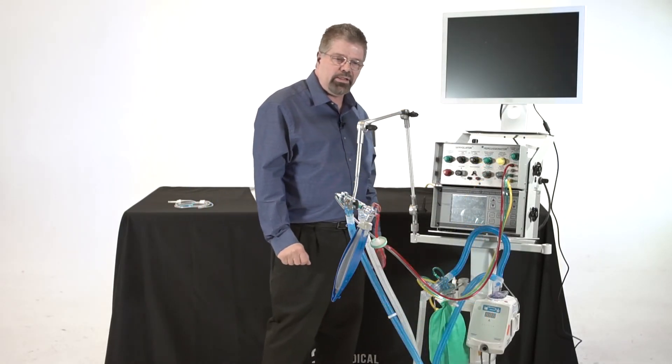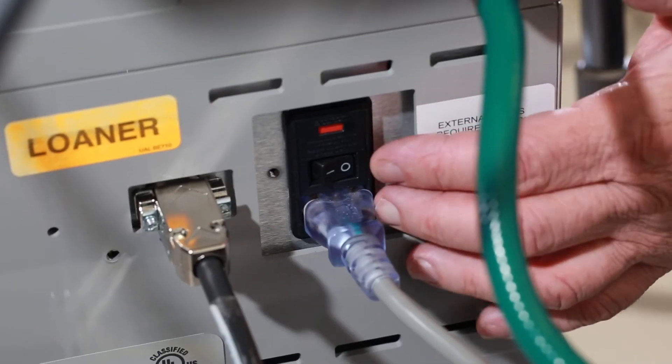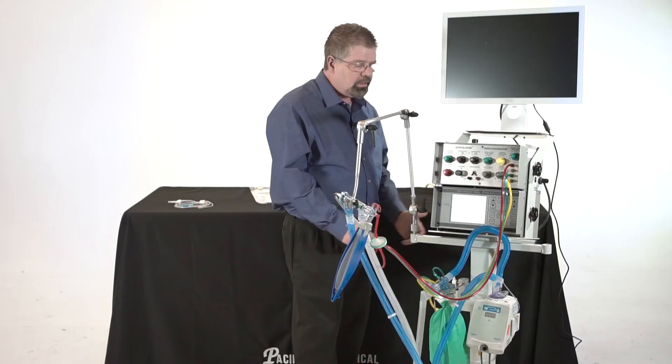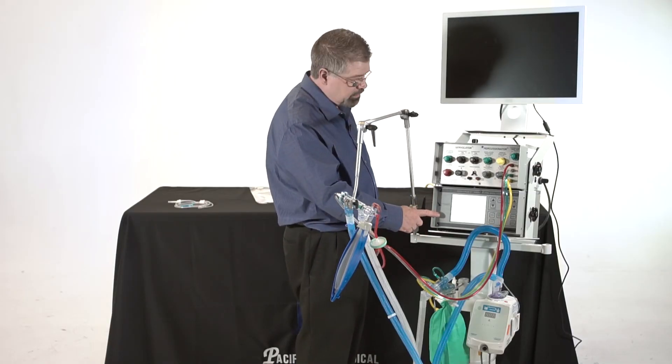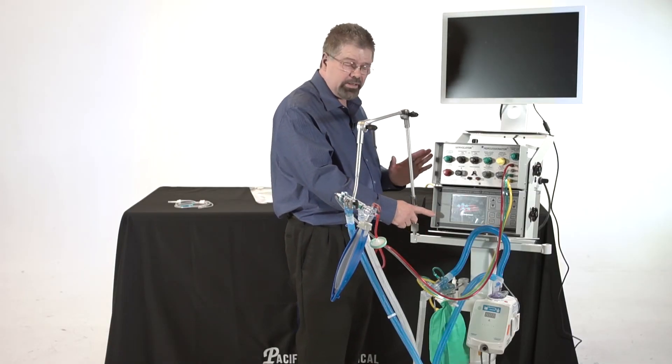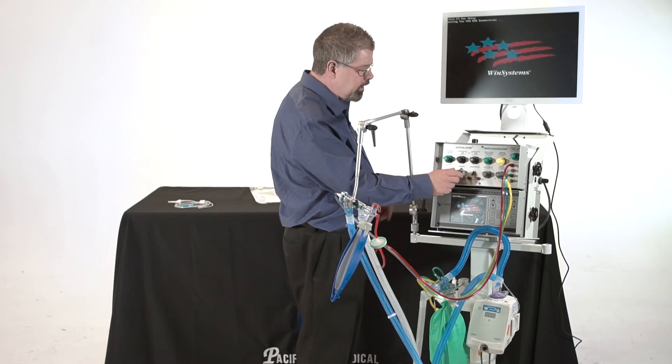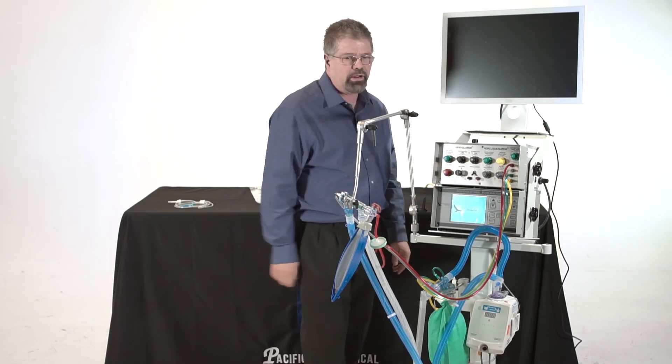So we want to now turn the ventilator on. I'm going to come back here to this toggle switch. The toggle switch just turns on the monitor. This is a fluidics ventilator. So to actually turn the ventilator on, I'm going to turn on internal working pressure there.